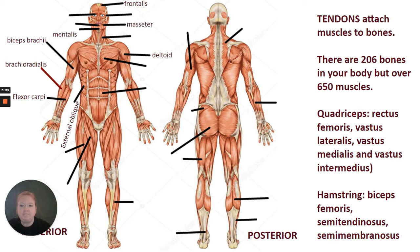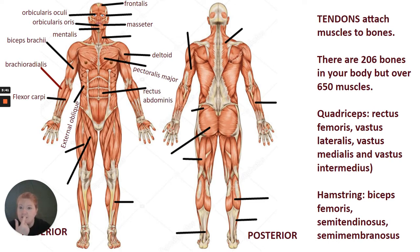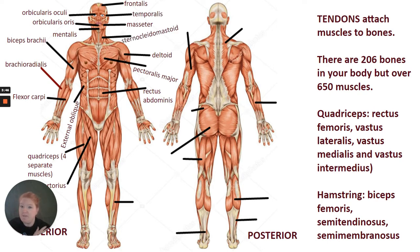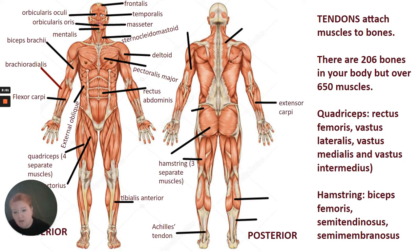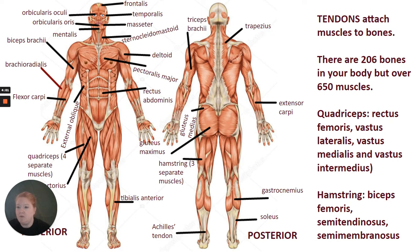Some muscles I've already mentioned: orbicularis oculi, orbicularis oris, masseter, mentalis, the deltoid, the hamstrings, the quadriceps, the sartorius — one of my favorites — and the gastrocnemius. One tendon you need to know is the Achilles tendon. You also need to know the triceps brachii in addition to the biceps brachii, plus the brachioradialis — it makes sense, as it comes near the biceps brachii but also goes to the radius.